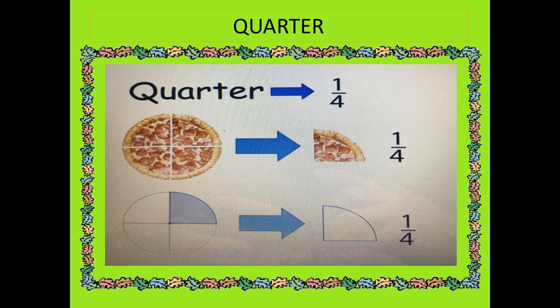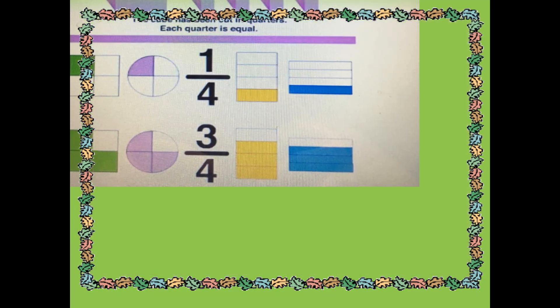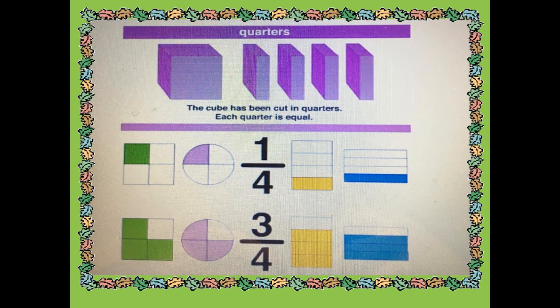Quarter. The cube has been cut in quarters. Each quarter is equal. One over four is a quarter. Three over four is three quarters.